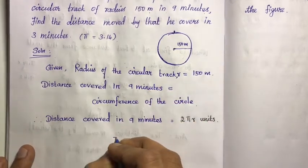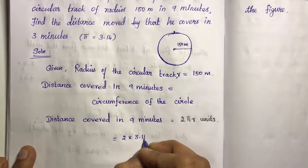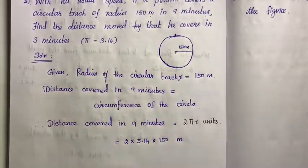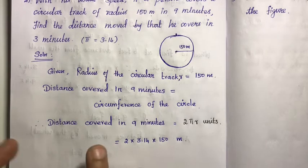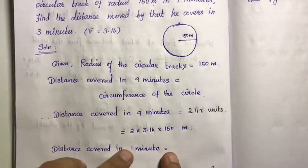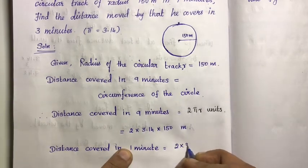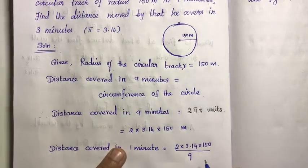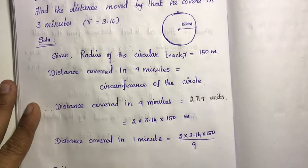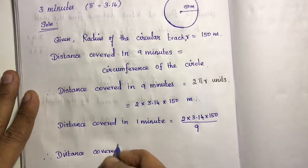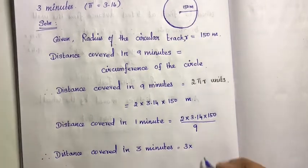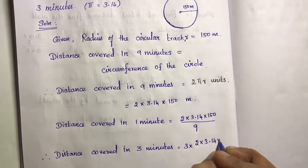Distance covered in 9 minutes equals 2 pi r. Substituting: 2 into 3.14 into 150. To find distance in 1 minute, divide by 9. Then for 3 minutes, multiply the 1-minute distance by 3. That gives: 3 into 2 into 3.14 into 150 divided by 9.